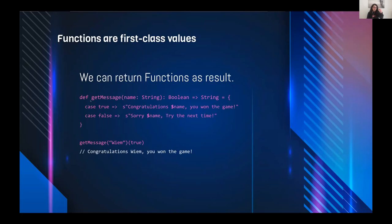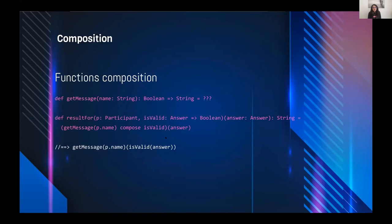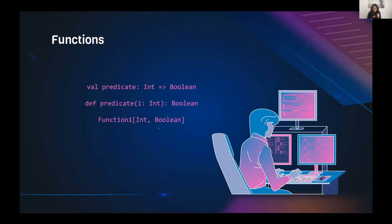We can compose functions together. For example, we compose 'isValid' with 'getMessage': if the answer is valid, we get the message. We provide the answer to 'isValid' to get a Boolean, then call 'getMessage' which takes the result of 'isValid' and displays the message based on that result.